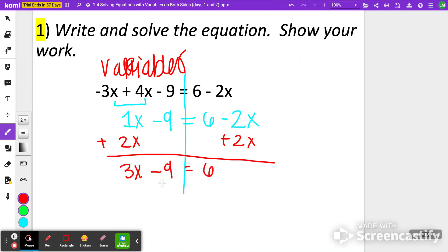Final step, add 9 to both sides or one of the final steps. I get 3x is equal to 15. And then my final step, yes, would be to divide both sides by 3. So that x is equal to 5.